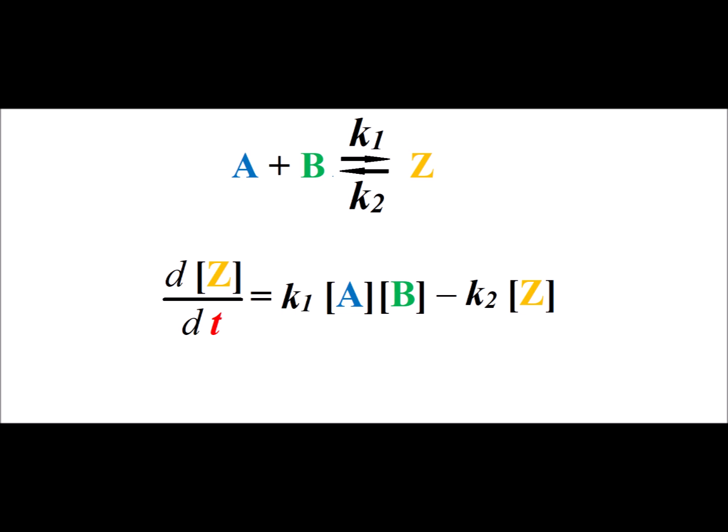The change in concentration of z per unit time is equal to k1 times the concentration of a times the concentration of b, minus k2 times the concentration of z.